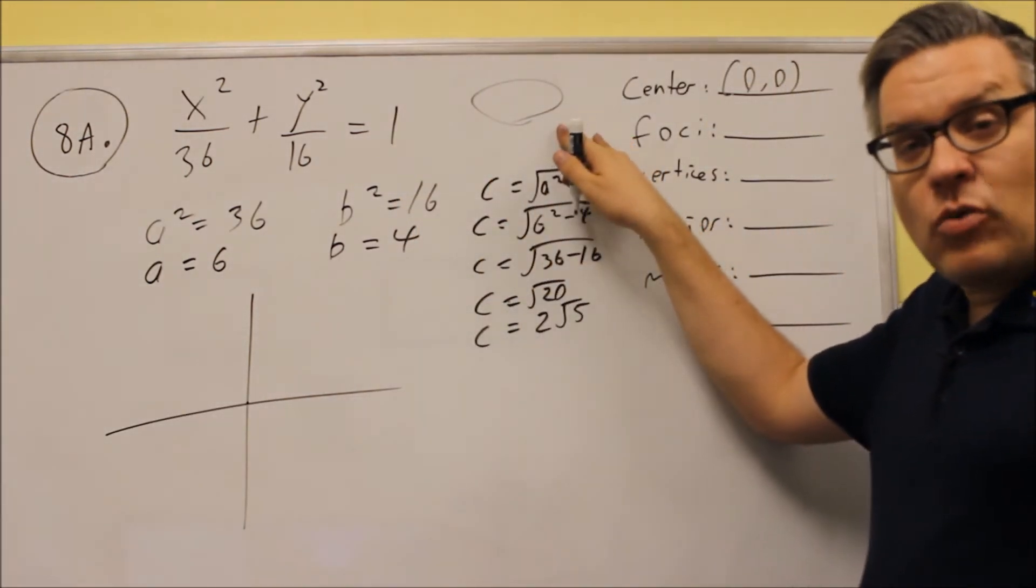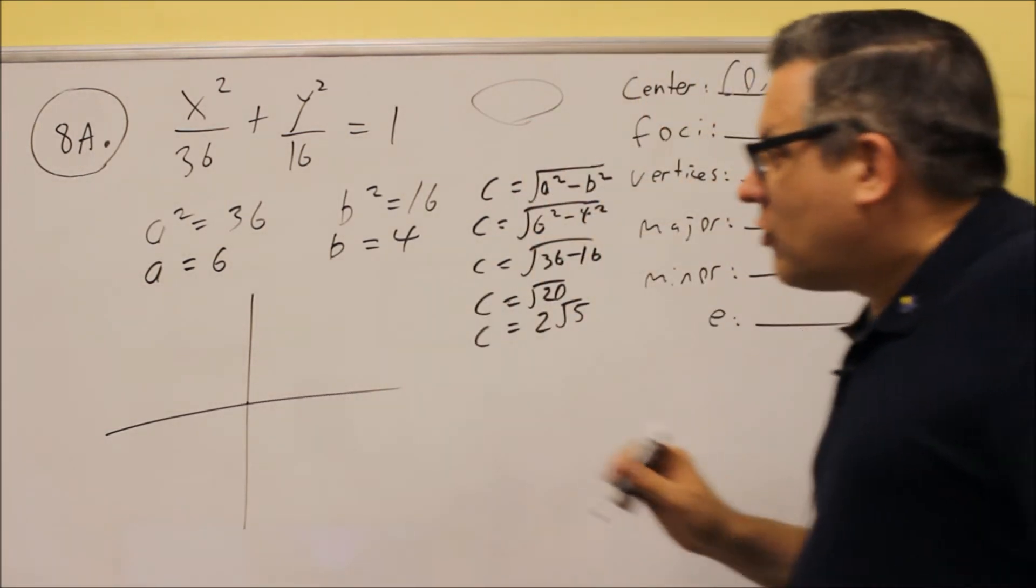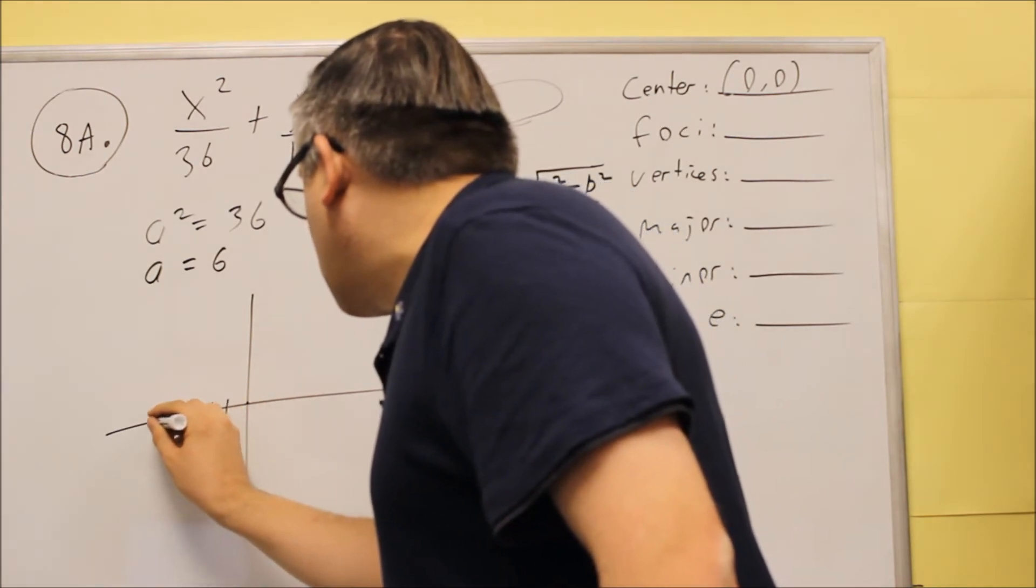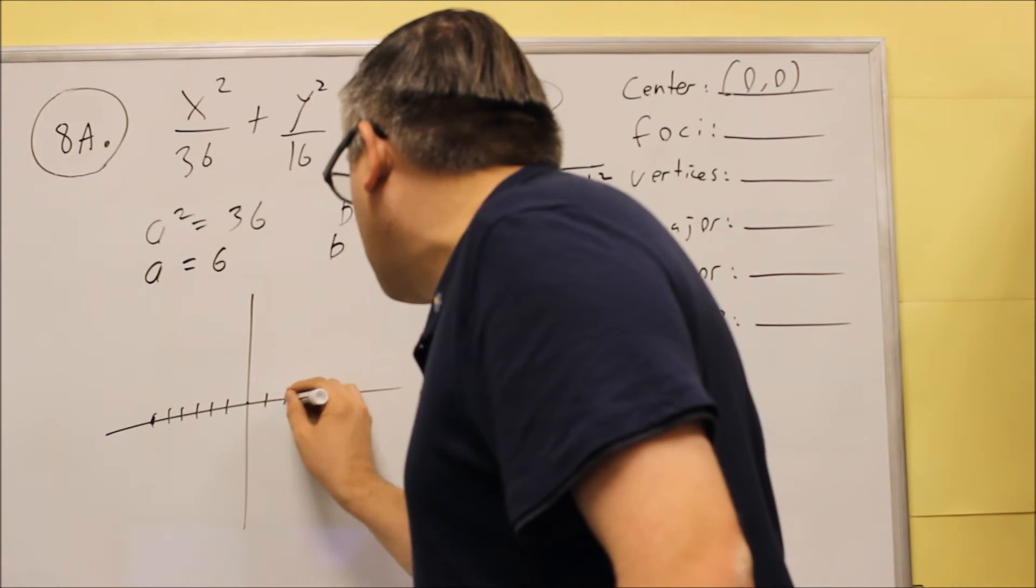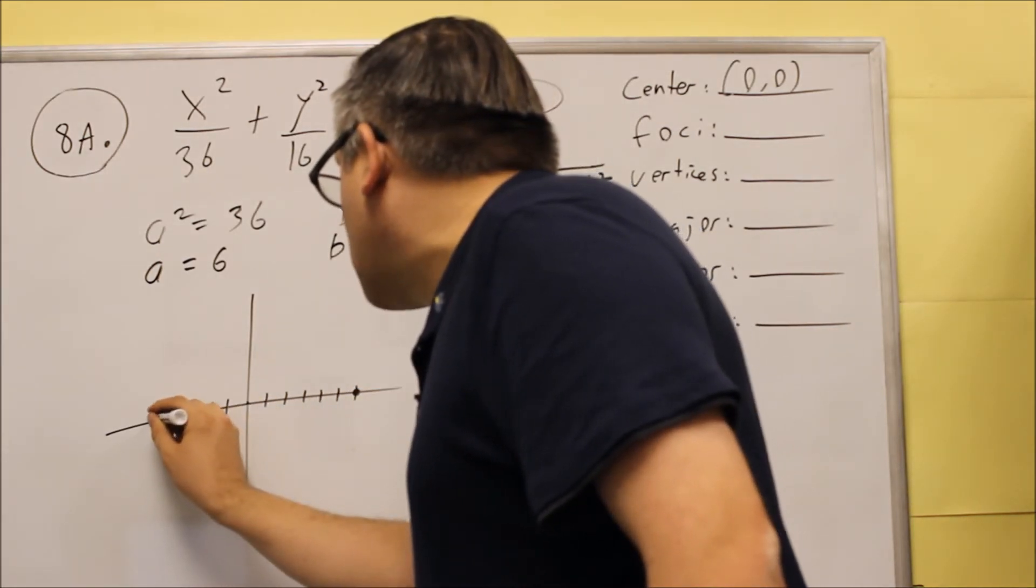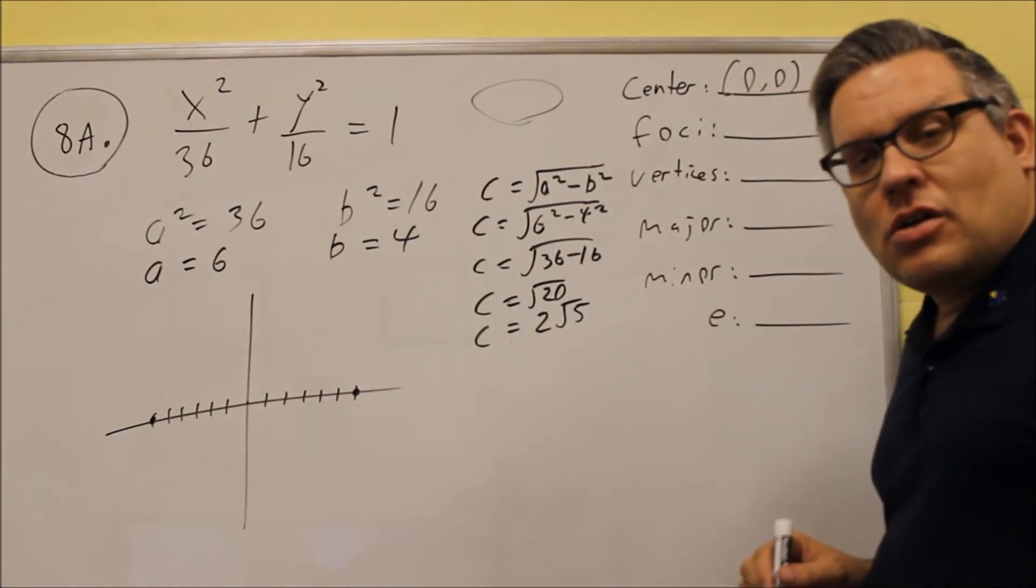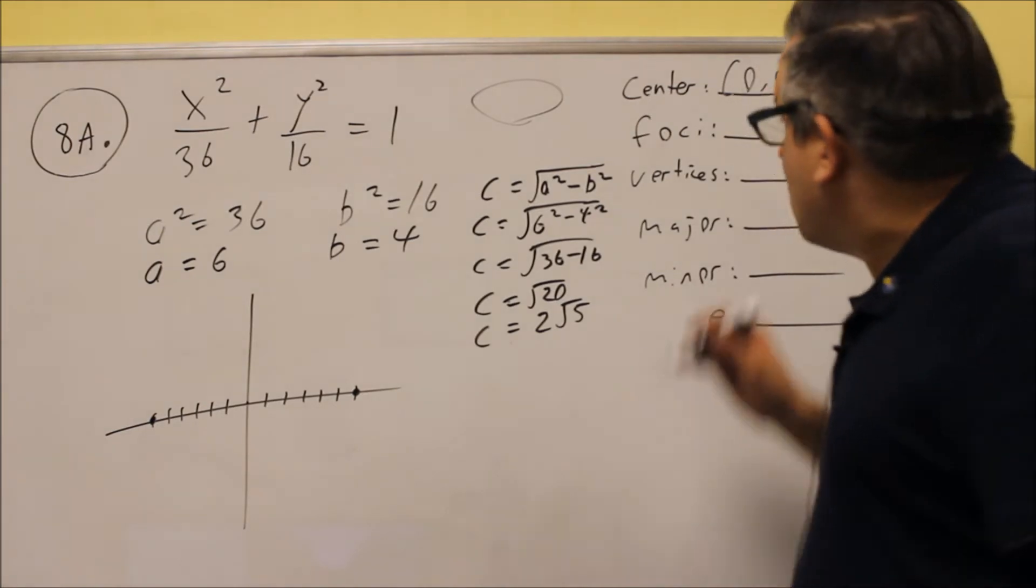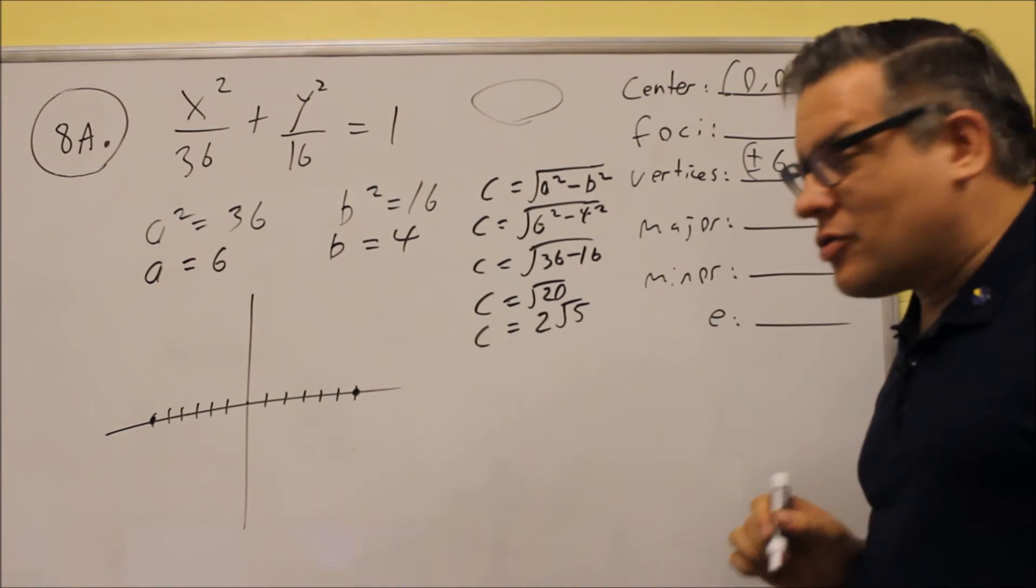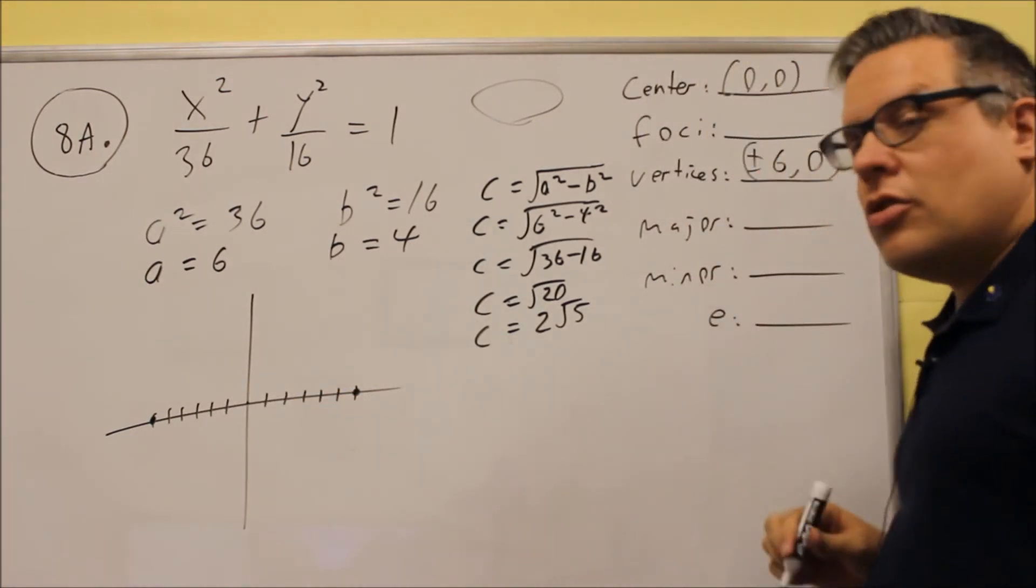So when I draw my graph, I'm going to center it at 0, 0. Since I know it opens up sideways, the a goes in the direction that it opens up. So I have to take the 6, I'm going to go to the left 6, I'm going to go to the right 6. And so what I just drew there, when you use the a value, that's going to be your vertices. So your vertices are going to be at plus or minus 6, 0. So we go 6, 0 and negative 6, 0, and that's going to be your vertices.